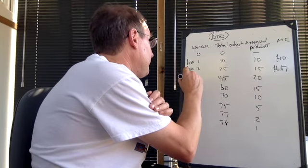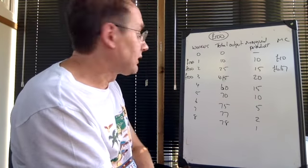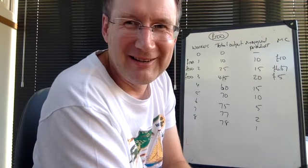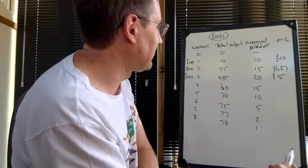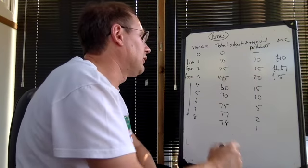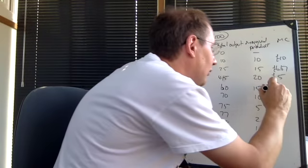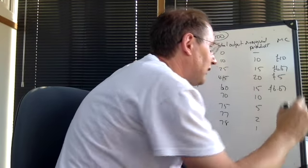The third worker is £100. They add 20 units. Therefore, that's £5 each. So all these are each adding £100. An extra 15 there. £100 divided by 15 is, I'm doing this in my head, but £6.67, I hope.